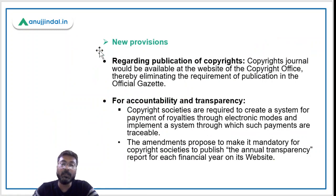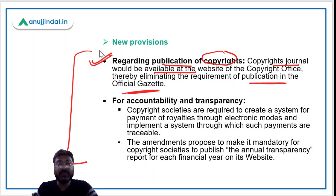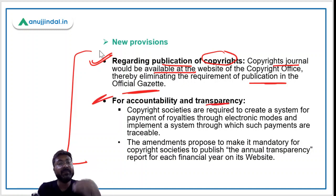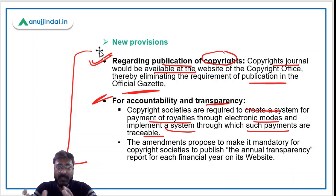Now let's look at the new provisions in the Amendment Rules 2021. First, regarding publication of copyrights: the copyrights journal will now be available on the website of the copyright office, and there is no longer a requirement for publication in the official gazette. Second, copyright societies are required to create a system for payment of royalties through electronic modes and implement a system through which such payments are traceable.